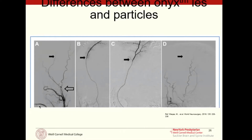The key thing about Onyx is that you have to be very careful, because particles go with the flow — you park the catheter near the MMA and the blood flow takes it where it needs to go. Onyx, however, can be pushed to places where blood flow is not going, so you must be very aware of collateral branches, as you can easily push Onyx into a branch you don't want to.